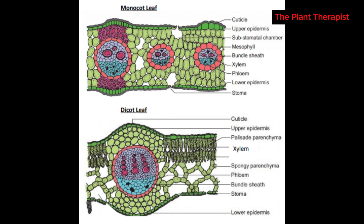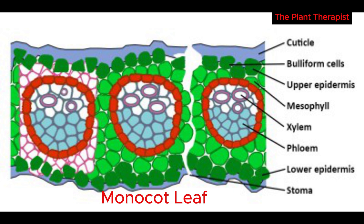Monocot leaves, besides having parallel veins, usually do not have the mesophyll differentiated into palisade and spongy layers. Some monocot leaves — for example, those of grasses — have large thin-walled buliform cells on either side of the main central vein, which is the mid-rib, towards the upper surface. Under dry conditions, during the dry season, the buliform cells partly collapse, causing the leaf blade to fold or roll.